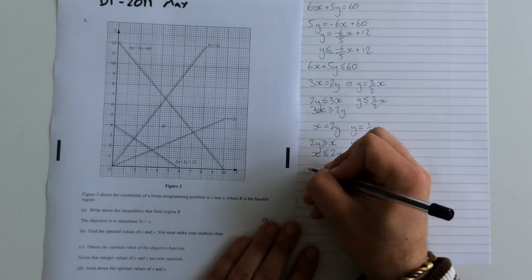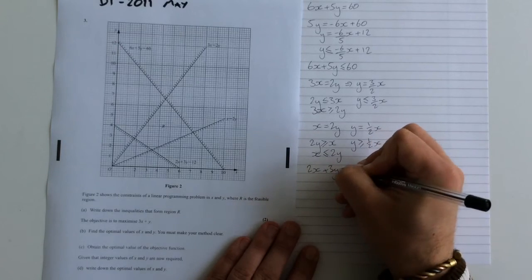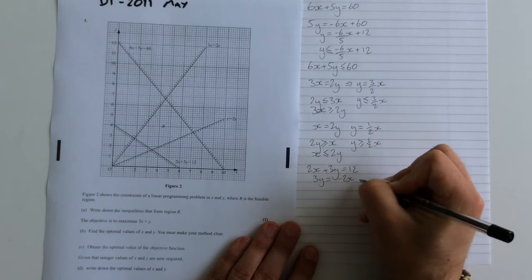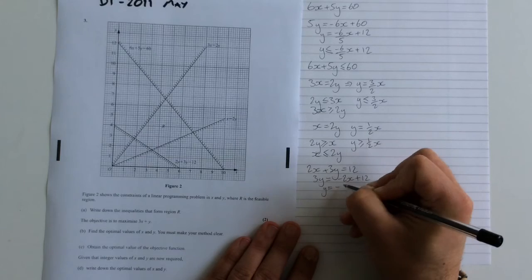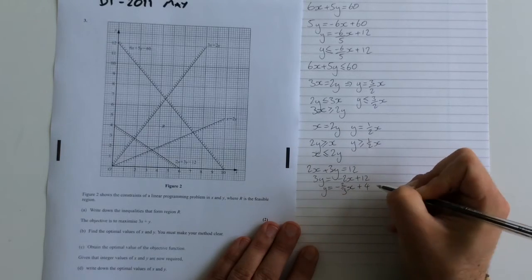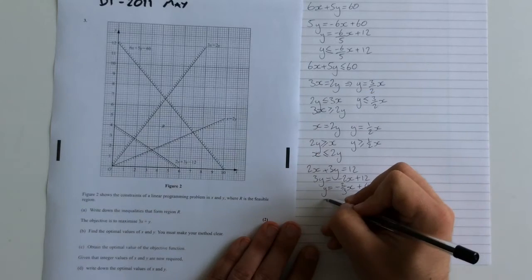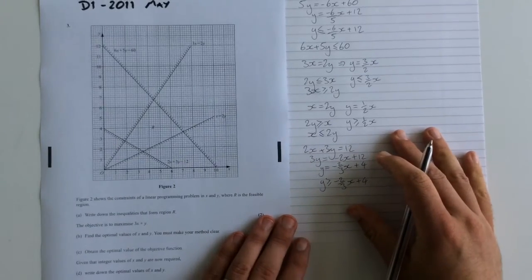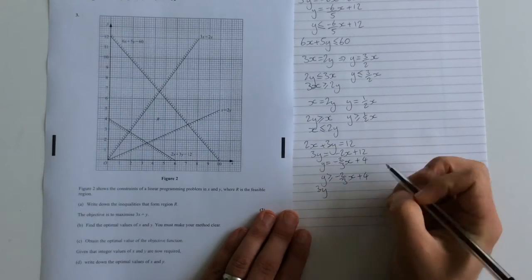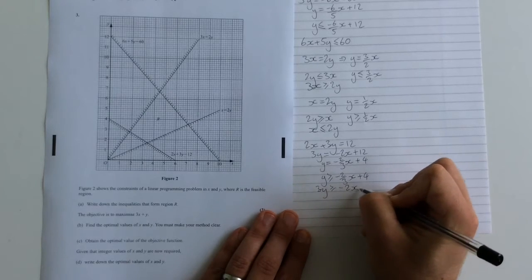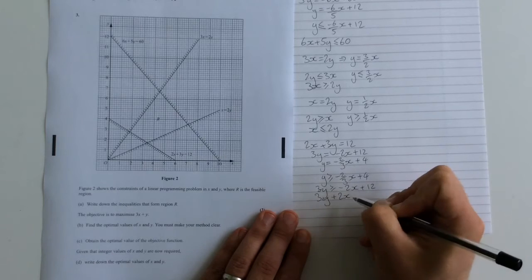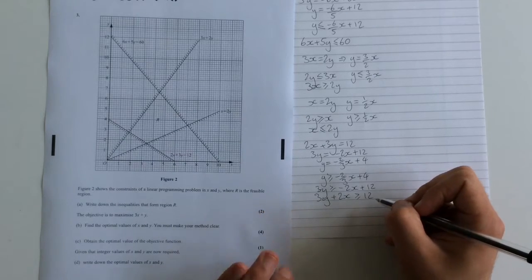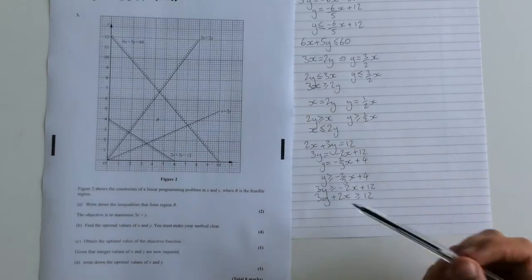The fourth one here is 2x plus 3y equals 12. Rearrange that one. You're going to get 3y equals minus 2x plus 12. Or y is equal to minus 2 thirds x plus 4. We want the stuff above it, so we want y to be greater than or equal to minus 2 thirds x plus 4. Or rearranging that one, 3y is greater than or equal to minus 2x plus 12. 3y plus 2x is greater than or equal to 12. And there we've got each of our constraints written in the inequality way, not just the equality way they're presented on our diagram.